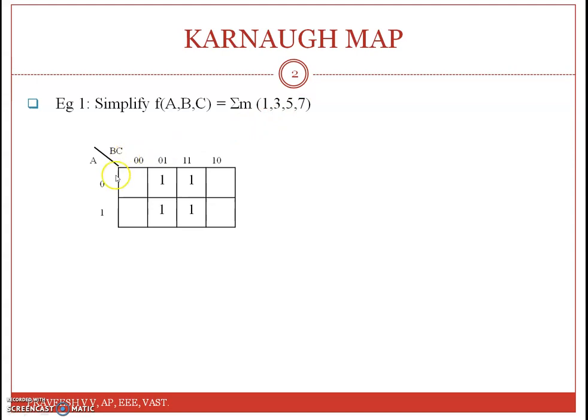The first step is the K-map. Form the A, B, C entries: 0, 1 for the first row, then 0, 0, 1 for the next, followed by 1, 1, 0.